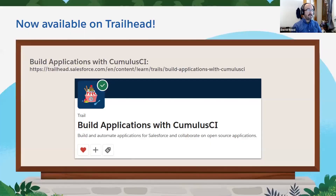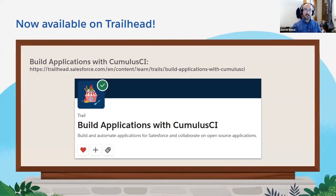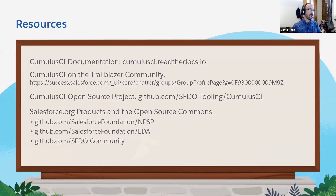Thank you. I'm happy to take more questions. Please take our trail if you're interested in CumulusCI — we published it back in April. You'll be taken through a sequence of operations very similar to what I demonstrated today, from starting a project to building comprehensive customizations and deploying into a production org. There's also documentation on Read the Docs, open community groups on the Trailblazer community and the Power of Us Hub, and all of our open source products that use CumulusCI which you can mine for examples and inspiration.